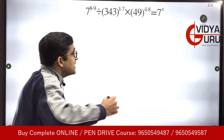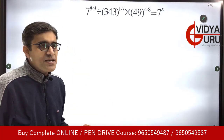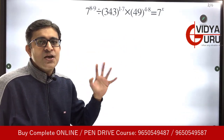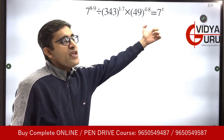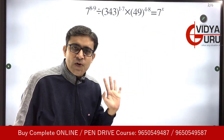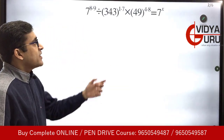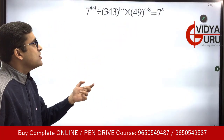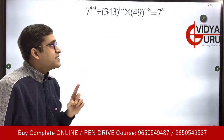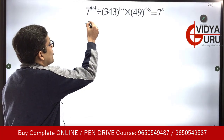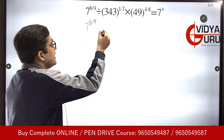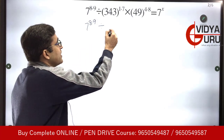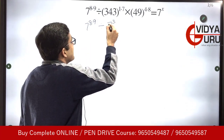Students, it may seem a difficult question but let's make it simple. We have 343, we have 49, and strange-looking powers 1.7 and 4.8. We have to find the value of x — it's a past exam question. Think of 343 and 49 in terms of 7. We have 7 raised to power 8.9 divided by 343, which is basically 7 cube. Students, 343 is 7 cube, so I am going to write it as 7 cube.